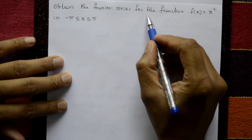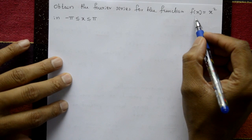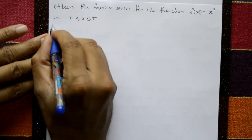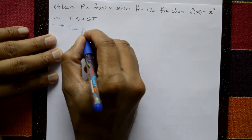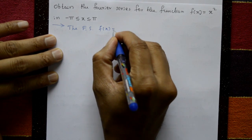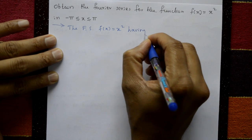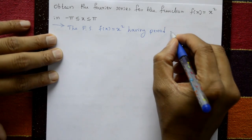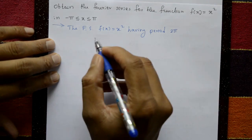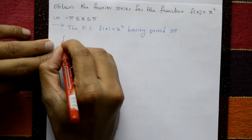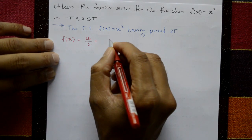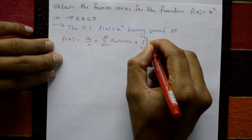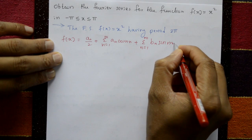Obtain the Fourier series for the function f(x) = x² on the interval minus π to plus π. The period is 2π. The Fourier series formula is: f(x) = a₀/2 + summation n=1 to infinity of aₙ cos(nx) + summation n=1 to infinity of bₙ sin(nx). This is equation number 1.